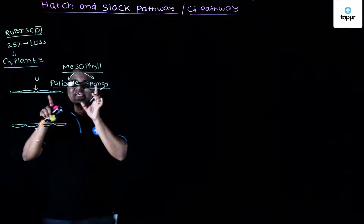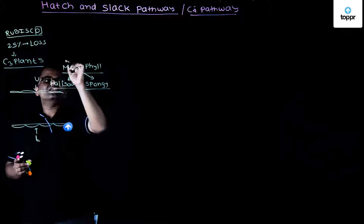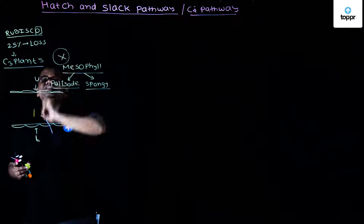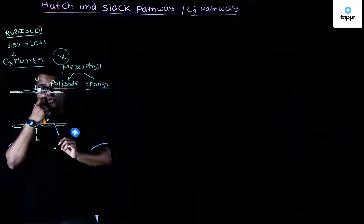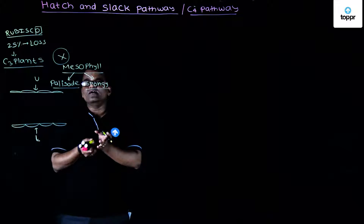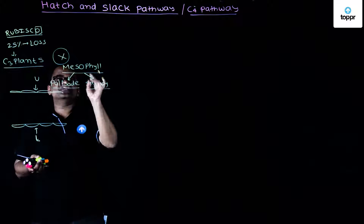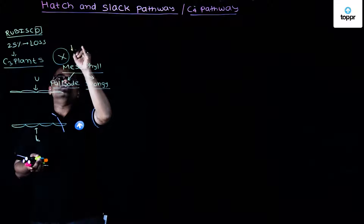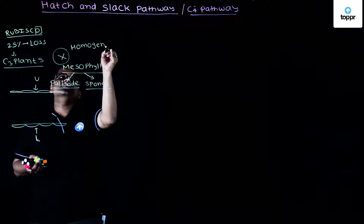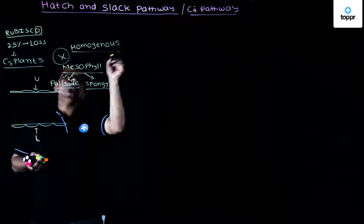In the case of C4 plants, there is no differentiation of mesophyll. Mesophyll will not be differentiated into palisade or spongy cells. Rather, it is going to be homogenous.